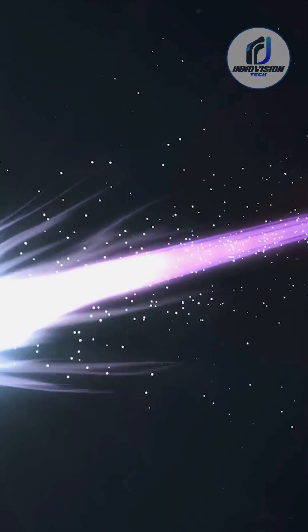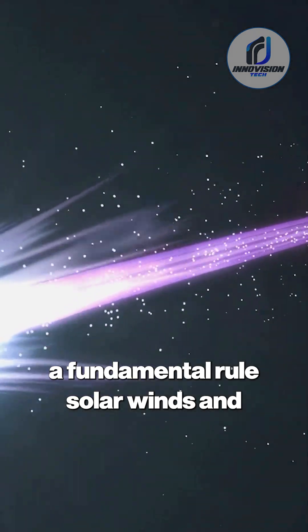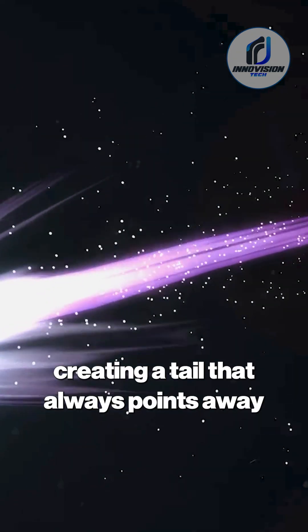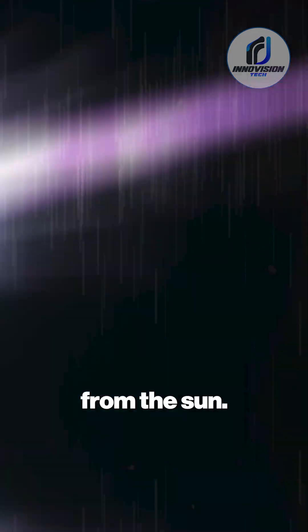Every comet we have ever observed follows a fundamental rule. Solar winds and radiation pressure blast dust and gas away from the nucleus, creating a tail that always points away from the sun.